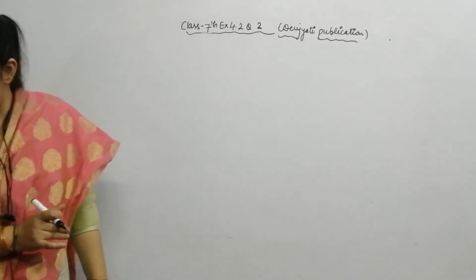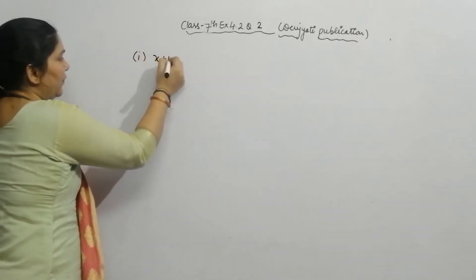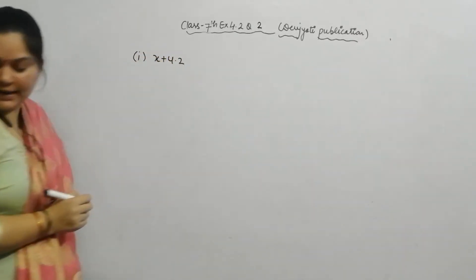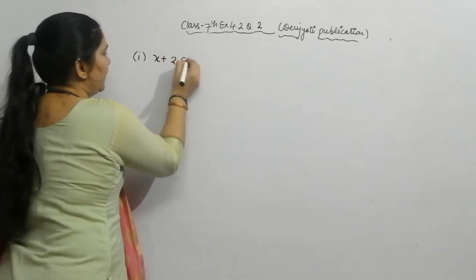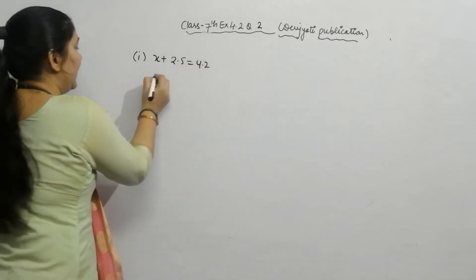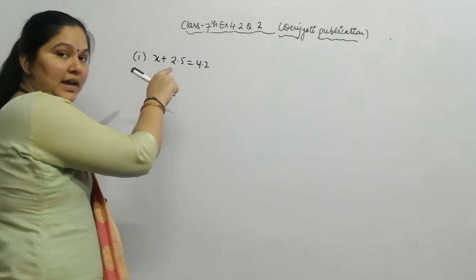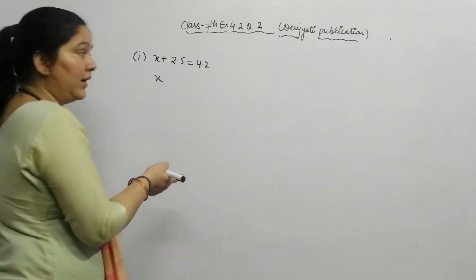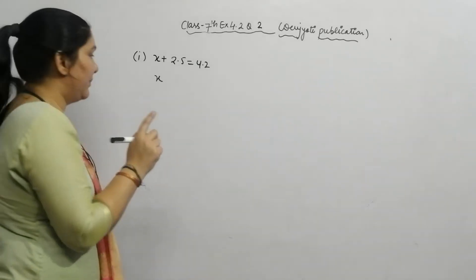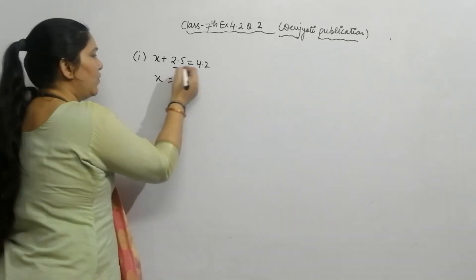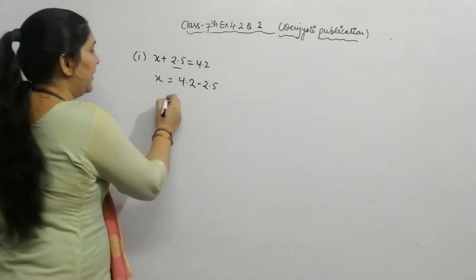Part 1 is: x plus 2.5 is equal to 4.2. To find the value of the variable, remember: if a constant is in addition on one side, it goes to the other side in subtraction — addition becomes subtraction, subtraction becomes addition. So, 2.5 moves to the right side: x equals 4.2 minus 2.5.